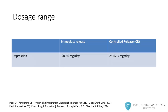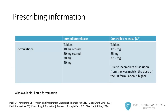The usual dosage range for depression is between 20 to 50 mg a day for the immediate release formulation and between 25 to 62.5 mg a day for the controlled release formulation.